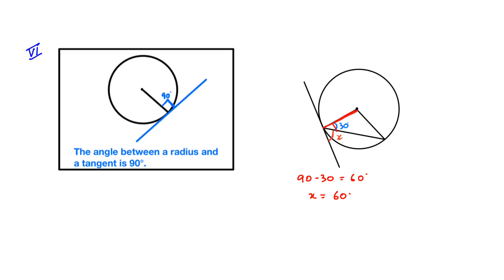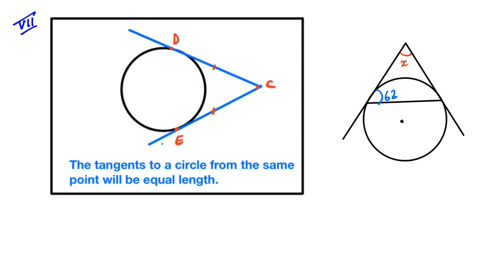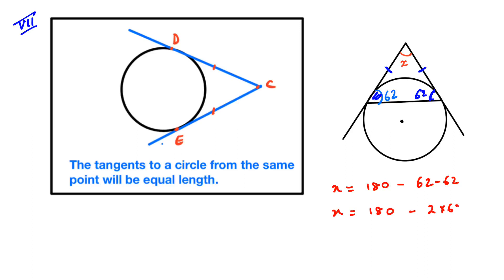As this is the radius, this angle here is going to equal 90 degrees. In this example, there is a point outside the circle with two tangents from that point. One angle has been given to us and we need to find x. Using this theorem, we know that both tangent lengths are equal, so it's an isosceles triangle. Therefore the base angles are both 62. To find x: 180 minus 2 times 62 gives us 56. So x is equal to 56 degrees.